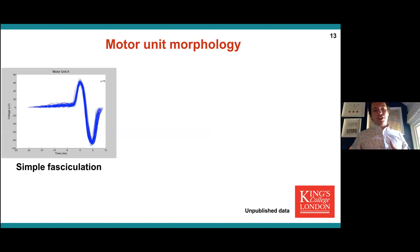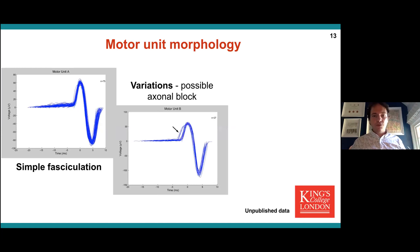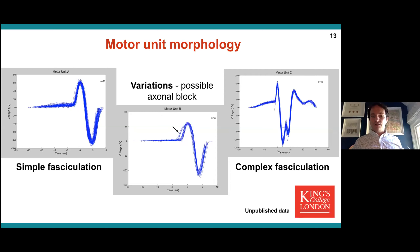Touching upon morphology, these are simple recordings taken at the surface from one channel on the grid. A simple fasciculation will go up, down, and back to baseline — we can detect that multiple times in a single recording. We've detected variations in that simple morphological profile, which we think might be a sign of axonal block within the terminal arborization, although this needs more investigation. Then you get complex fasciculations: much larger amplitude, clearly with some complexity, and much longer duration.